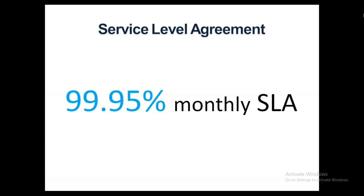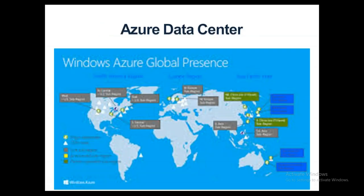If you create two instances for your application in different geographical locations, Microsoft commits to 99.95% reliability — that's the SLA agreement. You can see the various data centers across the globe; it's a somewhat outdated slide, so there are probably more data centers now than shown.